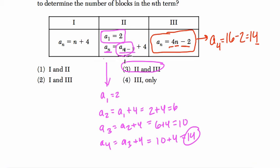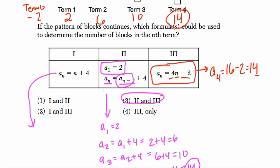So choices two and three both work, choice one does not work, because, for example, if you try a2, and you're saying it equals two plus four, is that true? Yes, it gives us six blocks for the second term, but a3, is that equal to three plus four? No, it gives us a seven, but the third term really has ten blocks, so this equation does not work.